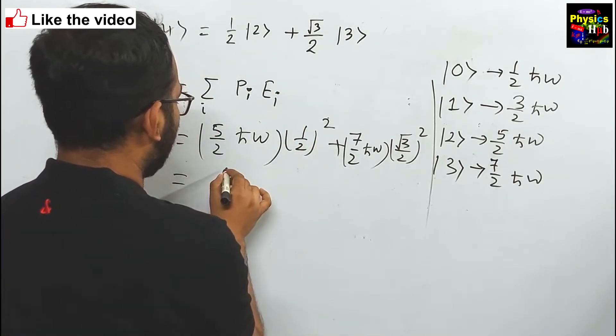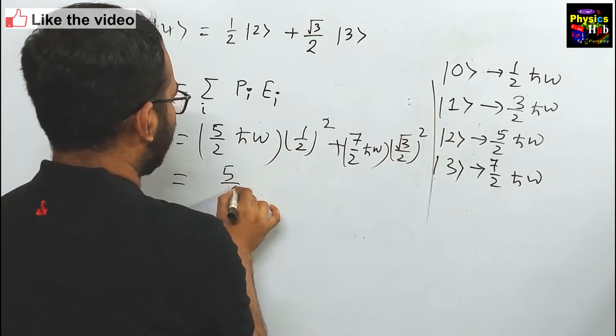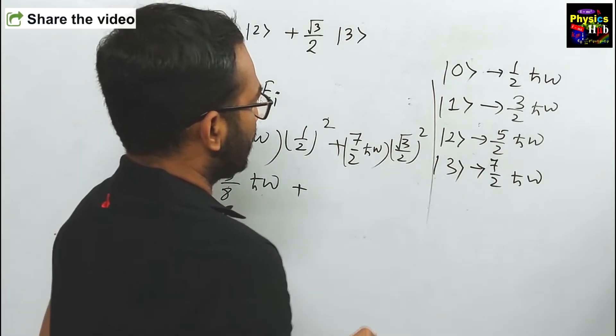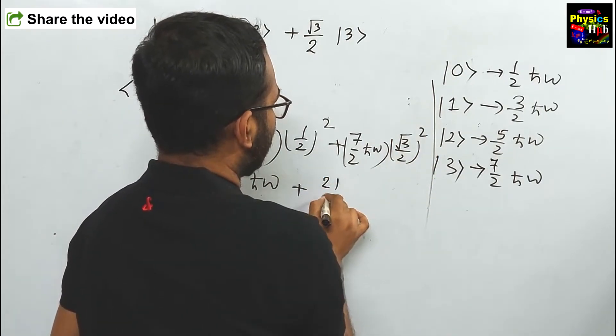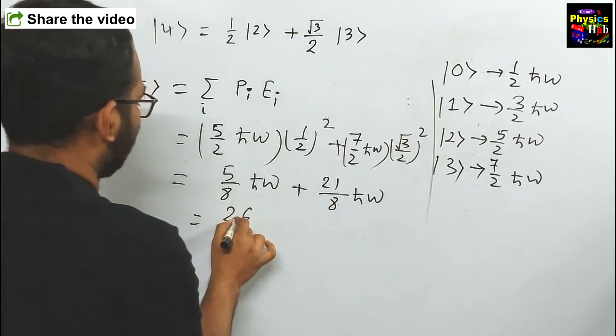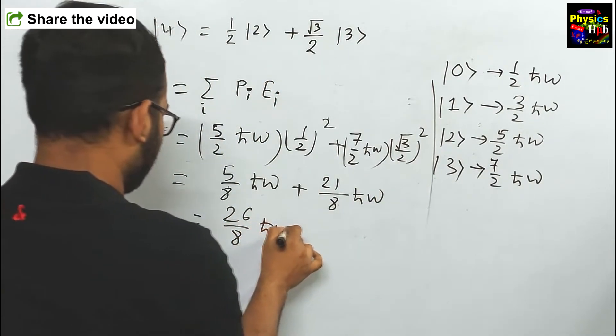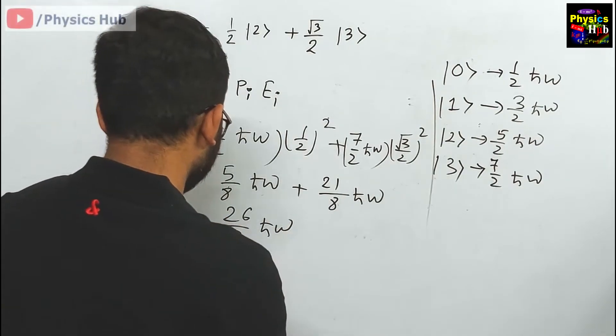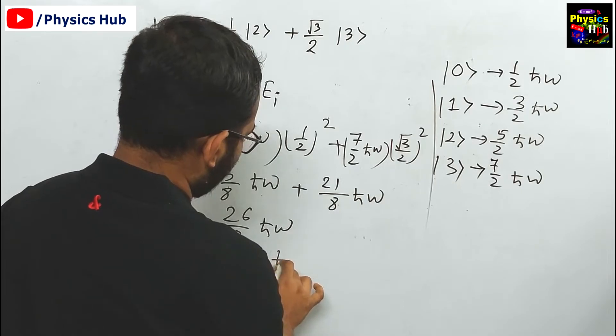It is 5/8 ℏω and this one gives 3/4 times, 21/8 ℏω. Adding them: 26/8 ℏω, which is basically 3.25 ℏω.